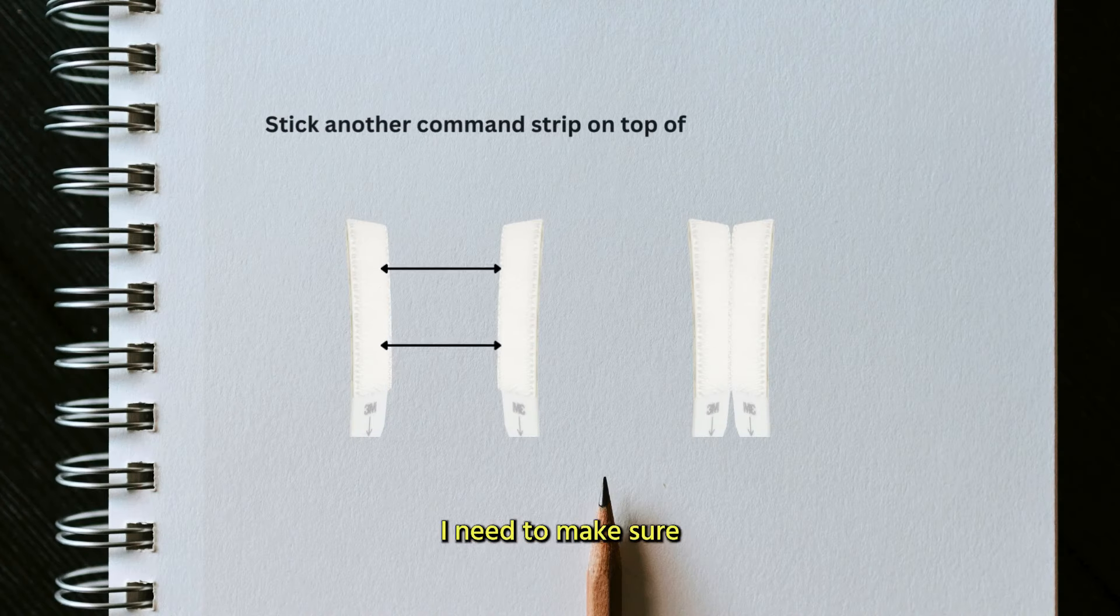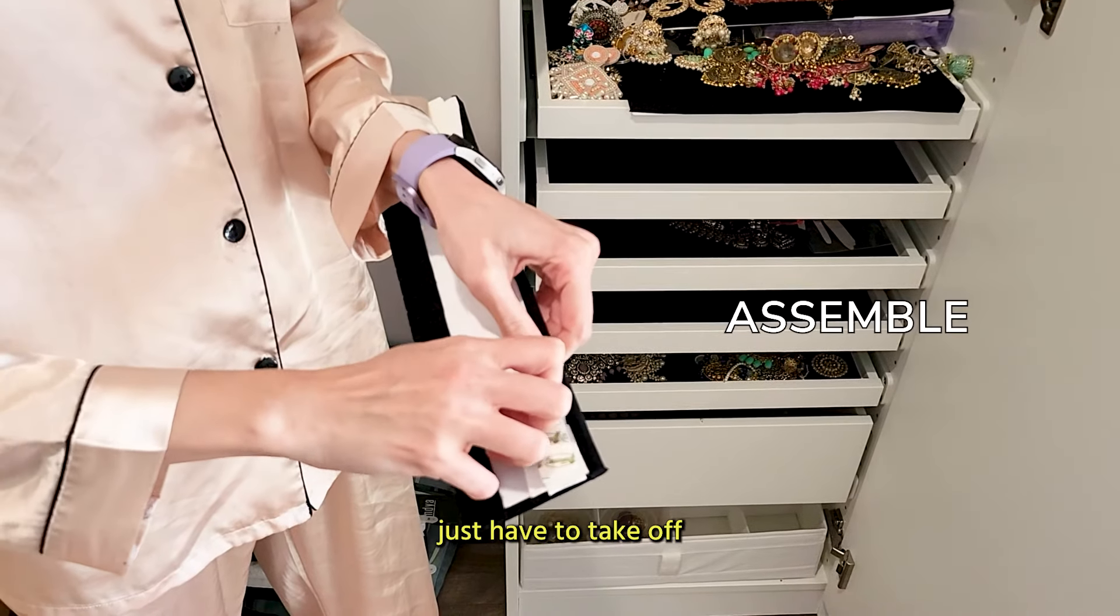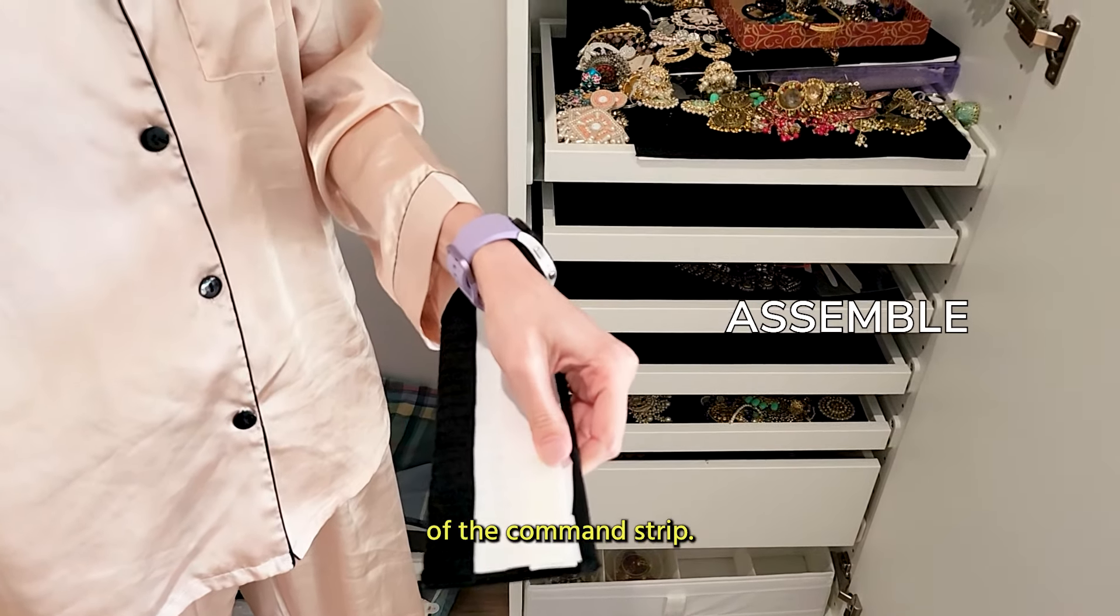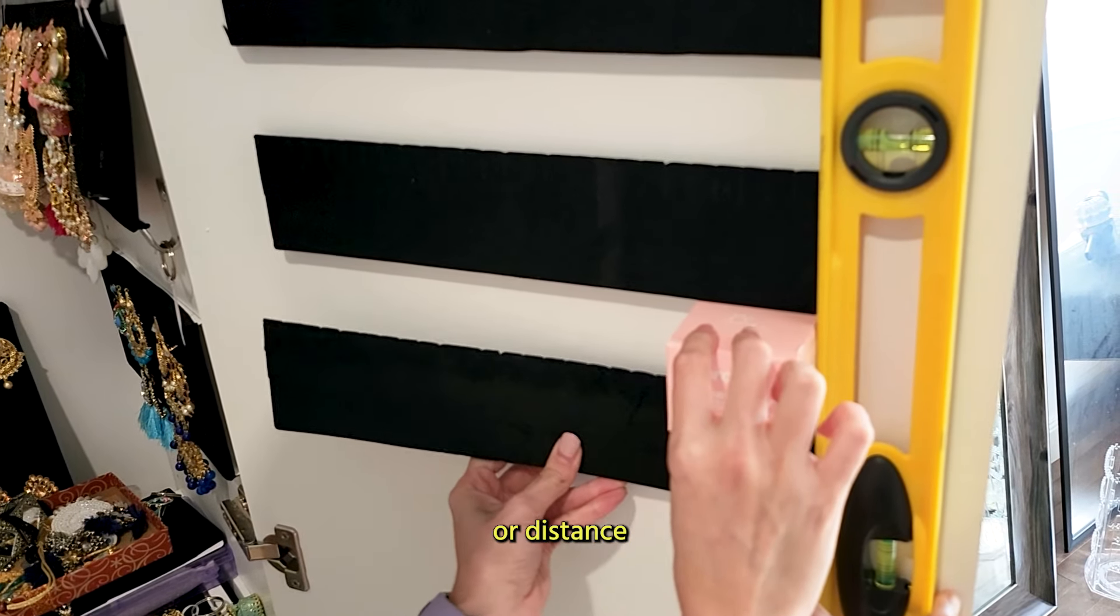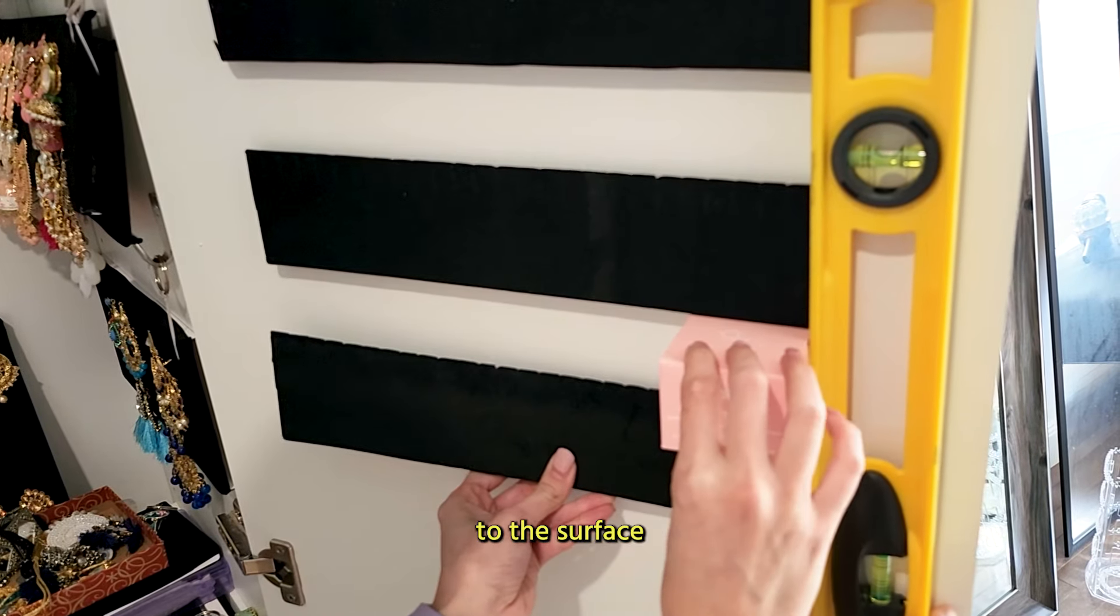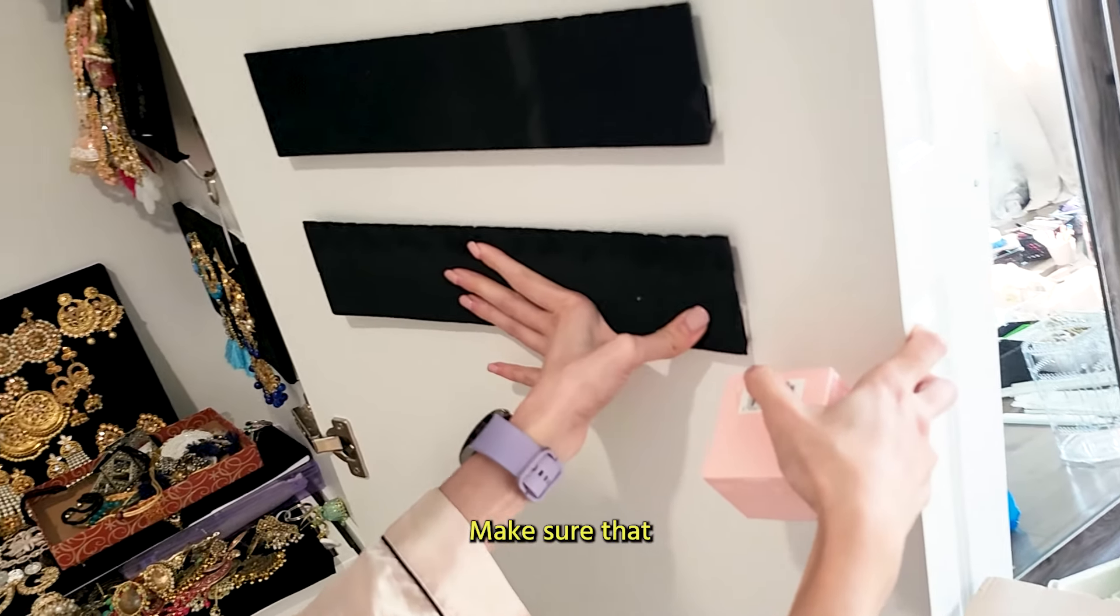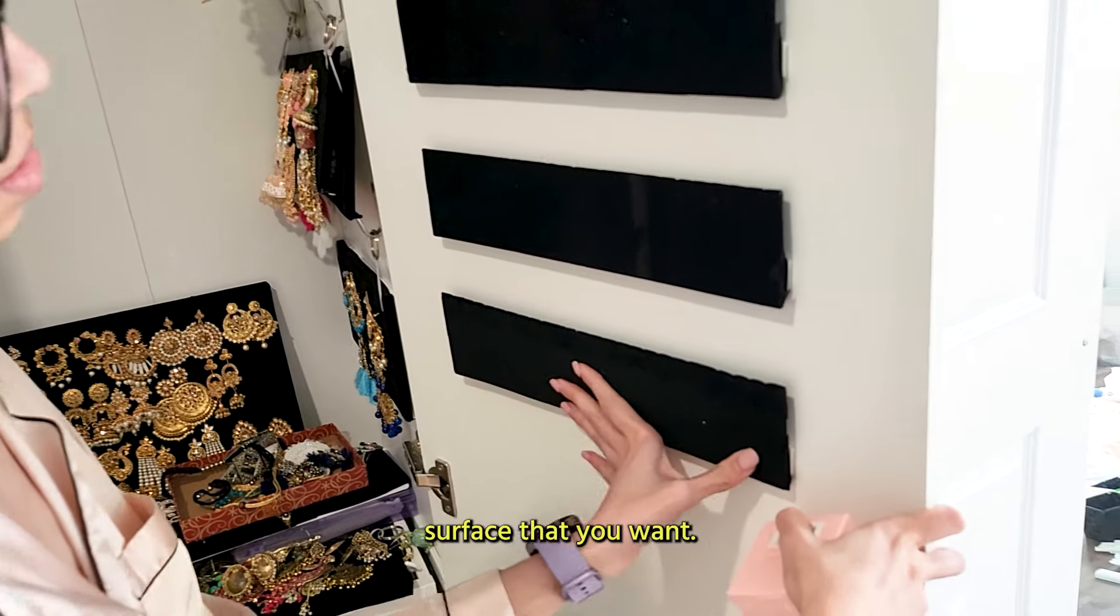When all of this is done, I need to make sure that they are level. You just have to take off the film off of the command strip and you can put it according to whatever size or distance that you prefer and you basically now stick it to the surface that you like. Make sure that the command strip supports the surface that you want.